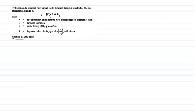Okay, so let us see this question. It's saying that hydrogen can be separated from natural gas by diffusion, and the rate of separation is given by n = 2πDρr. It's in front of you, and we need to know what are the units of D.